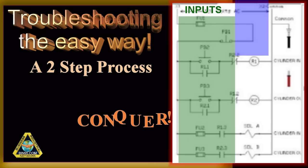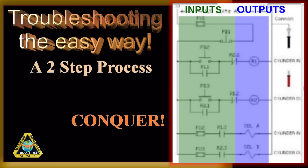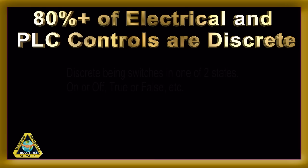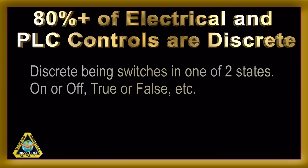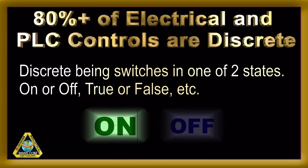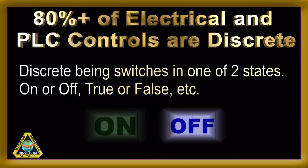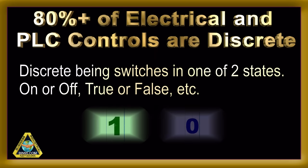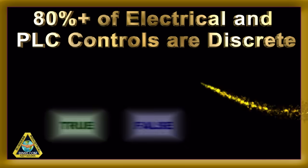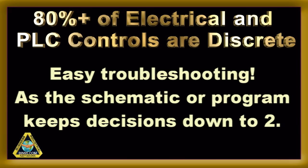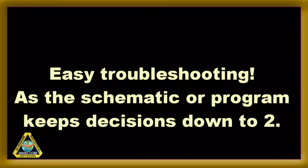Your first divide is to decide to start the circuit trace with the input or output. 80% or more of electrical and PLC controls are discrete. Discrete means a switch in one of two states: on or off, one or zero, true or false. Easy troubleshooting because the schematic or program keeps decisions down to two.